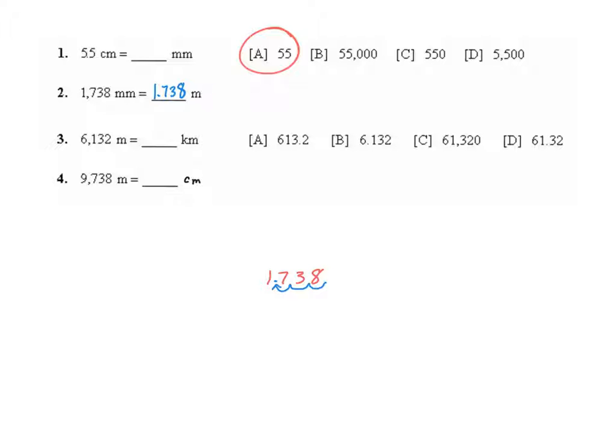And if we think about that, that is a reasonable answer because I should have between 1 and 2 meters, and I have one full meter and then 738 millimeters out of 1,000 that it takes to make one more meter.